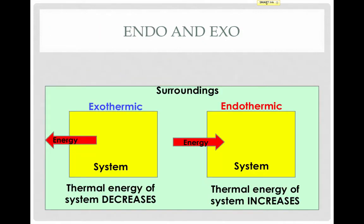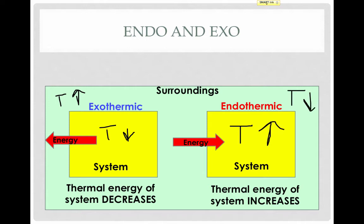Looking at this diagrammatically, we can see on the left that an exothermic process has energy, as indicated by the red arrow, flowing out of the system and into the surroundings. This will cause the temperature of the system to decrease and the temperature of the surroundings to increase. On the right, our endothermic process has energy flowing from the surroundings to the system. This will cause the temperature of the system to increase and the temperature of the surroundings to decrease.